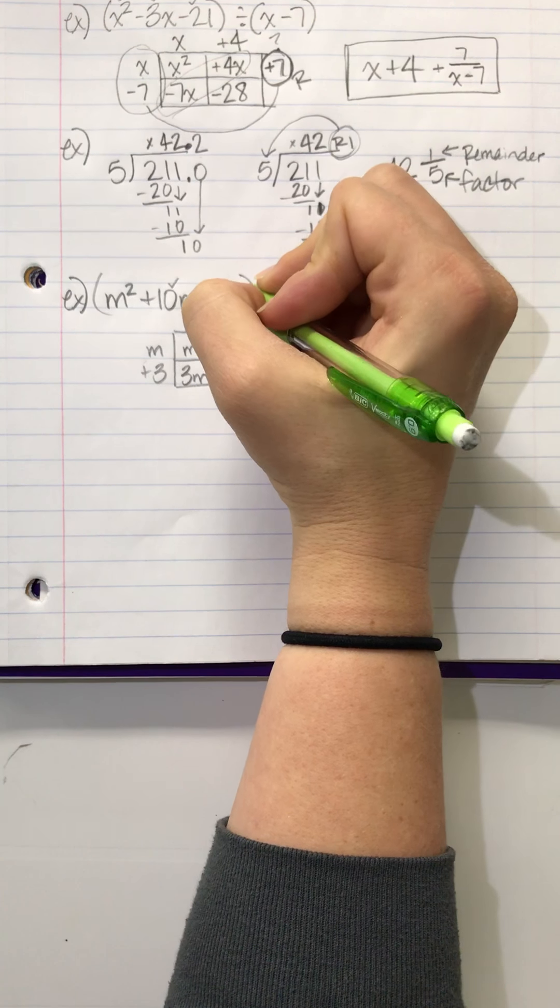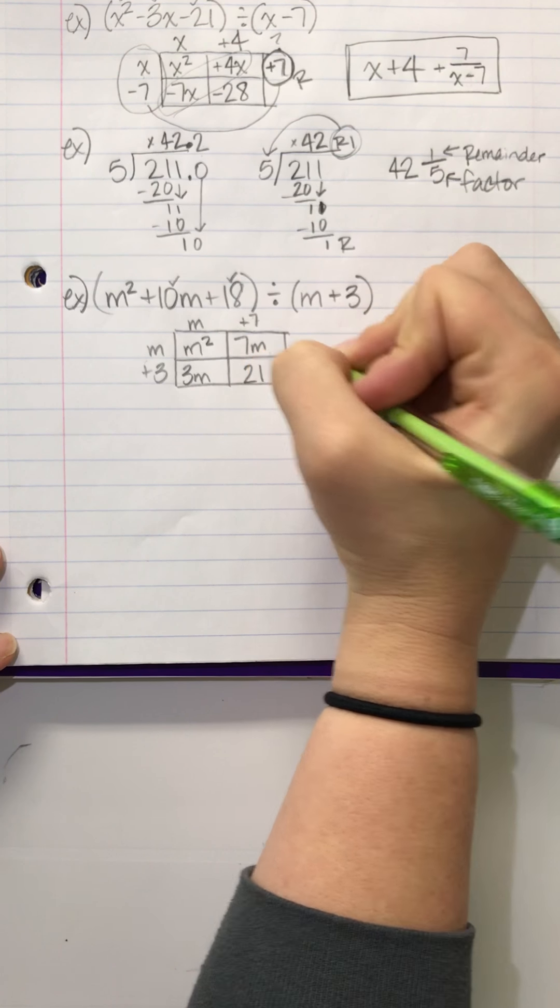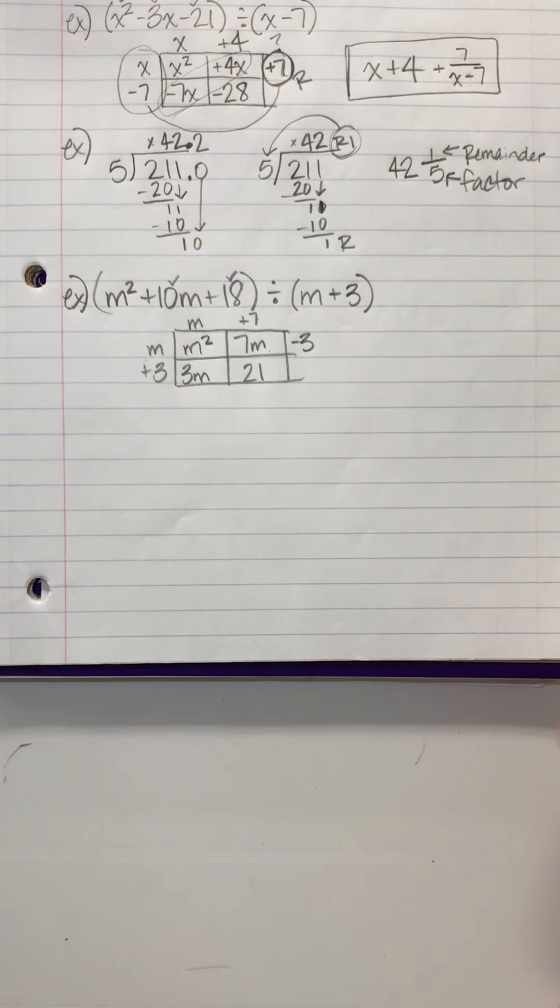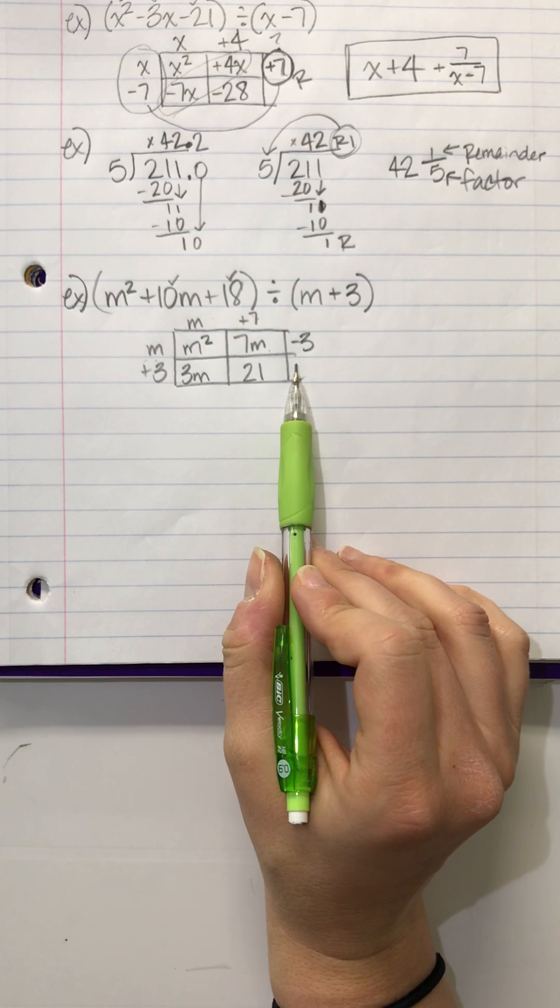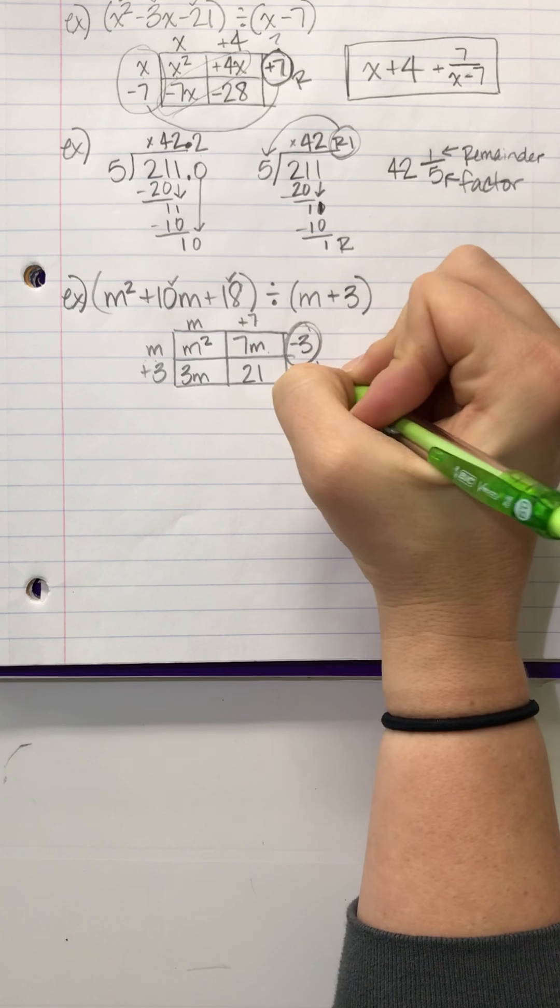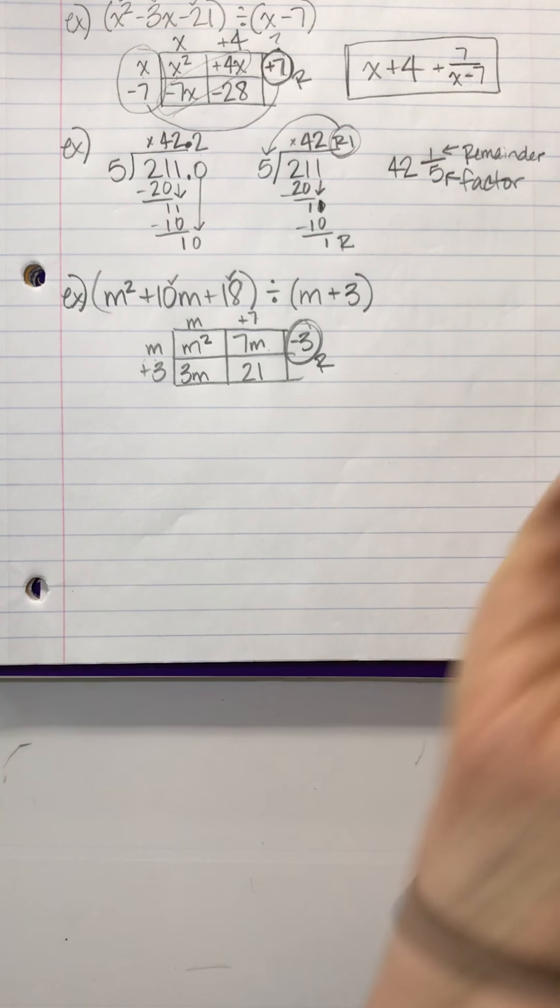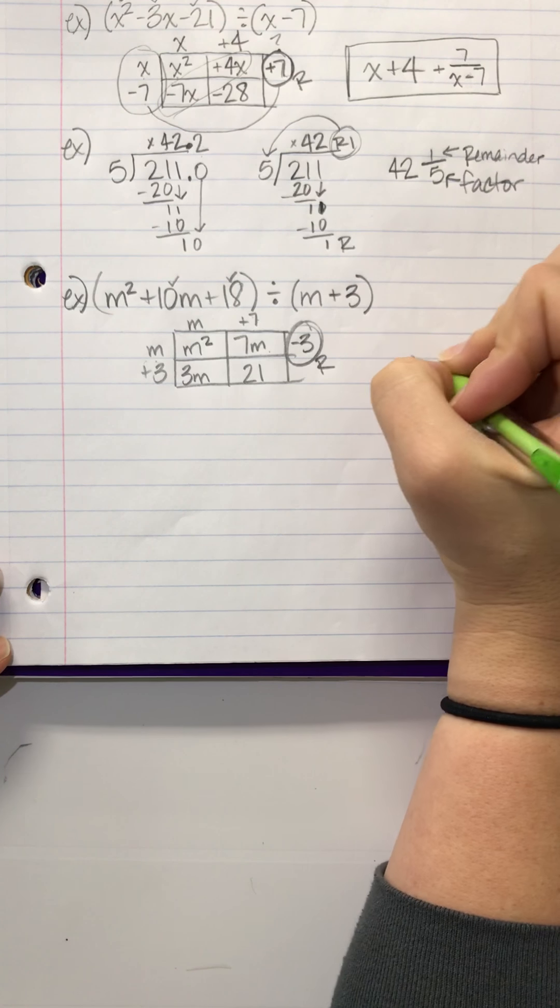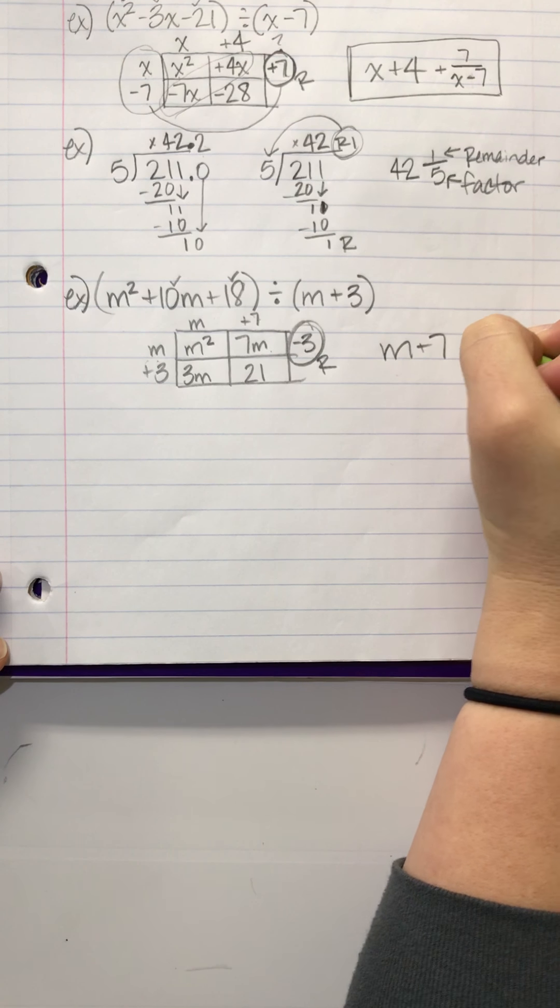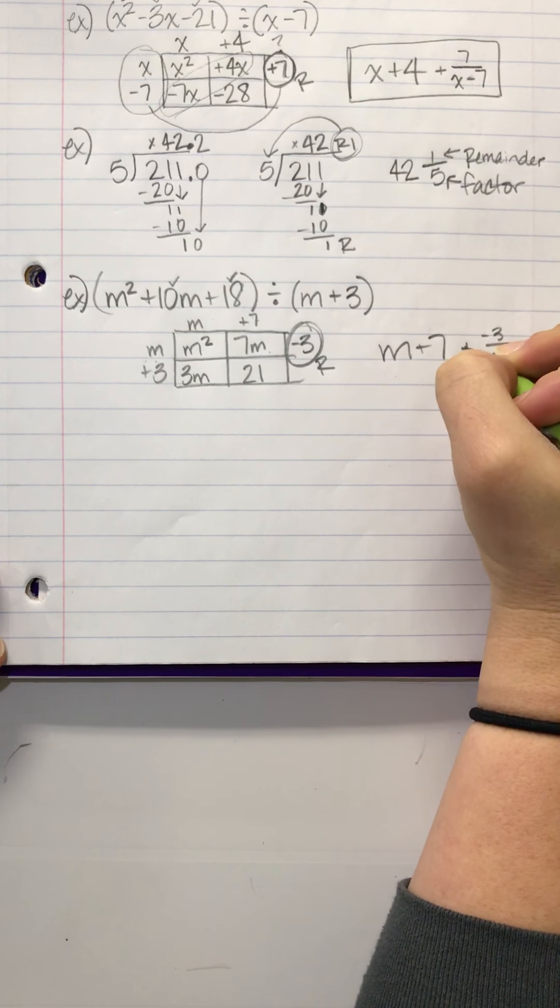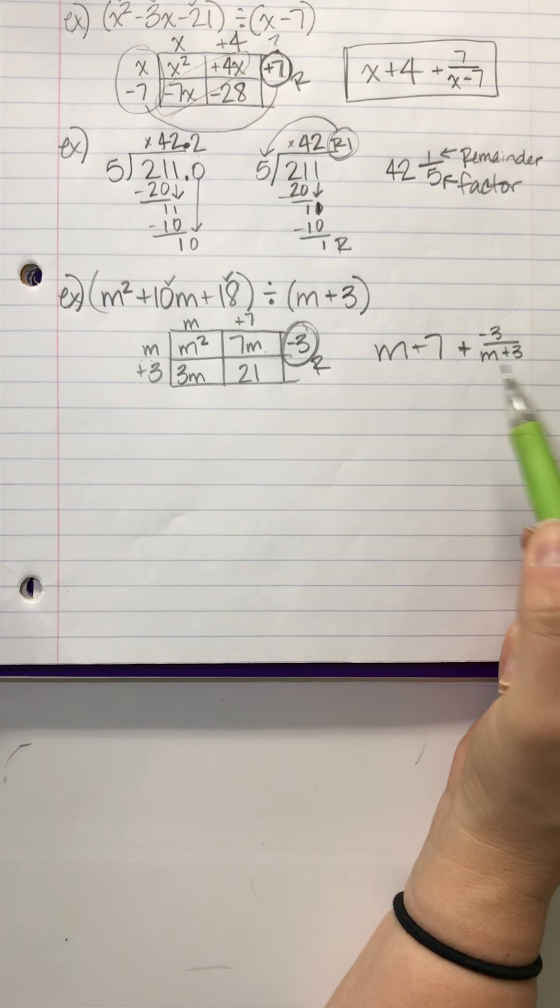But I don't want 21, I want 18. So, what does that need to be? Negative 3. And again, here's where you run into when you start going, how do I turn an m into a negative 3? You can't. So, if you get something that cannot be done, that's your remainder. So, my answer is, Aion, give it a shot. m plus 7 plus negative 3 over m plus 3. You are exactly right. You could just put minus instead of plus the negative 3. That totally works. It's the same thing.